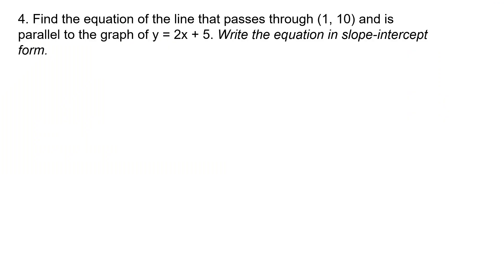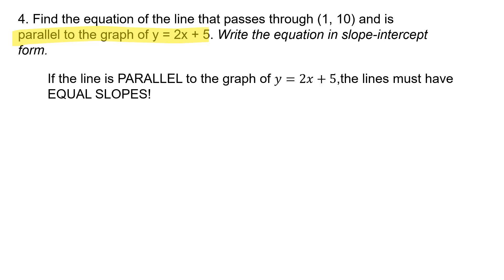Let's look at an example — this is something I would put on the exam, so put a star beside it. Find the equation of the line that passes through (1, 10) and is parallel to the graph of Y equals 2X plus 5. Write the answer in slope-intercept form. Since the new line is parallel to Y equals 2X plus 5, those lines must have equal slopes. The slope of Y equals 2X plus 5 is the coefficient in front of X, which is two. So M equals two.